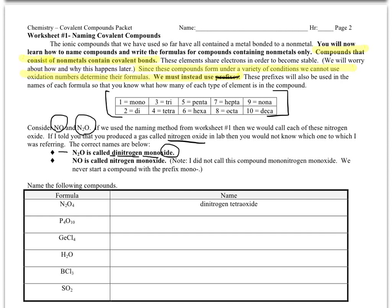NO would then be nitrogen monoxide—not dinitrogen because we don't have two nitrogens. Now you're probably wondering why wouldn't you call it mononitrogen monoxide. There's one nitrogen and one oxygen, so they should both have prefixes of mono. Well, this is a weird exception to the rule: we never start a compound with the prefix mono.